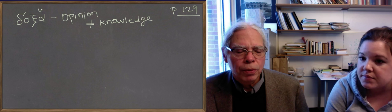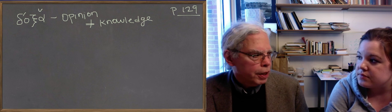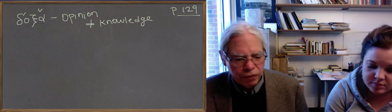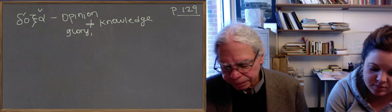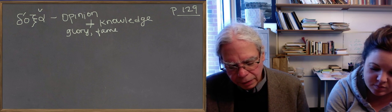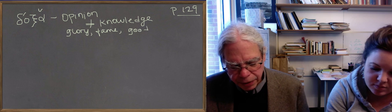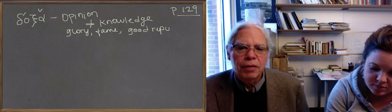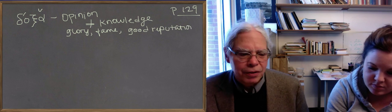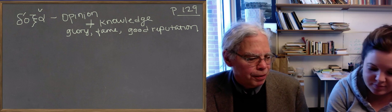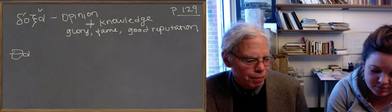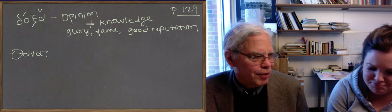But also, the older meaning of this word is glory and fame, and good reputation. We get the noun for death in Greek, θάνατος, which I think survives in English in the name of a famous poem that you used to memorize in school, Thanatopsis.